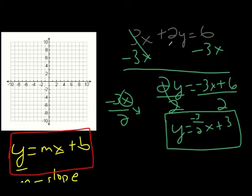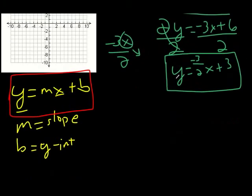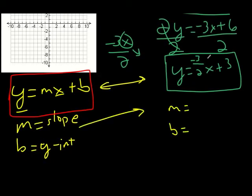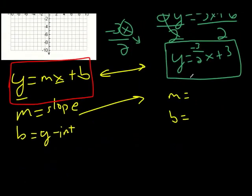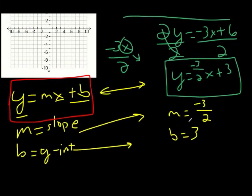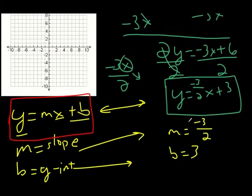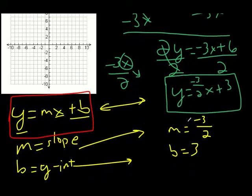We took this equation and isolated y. These correlate with each other, so m, the slope of the line, will be -3/2, and b, the y-intercept, is 3. Using this equation, we've already figured out the slope and the y-intercept of the line.